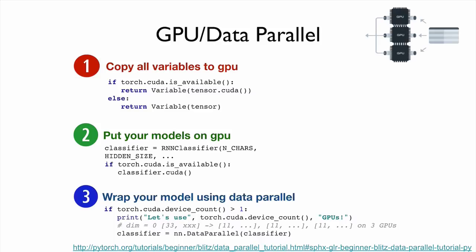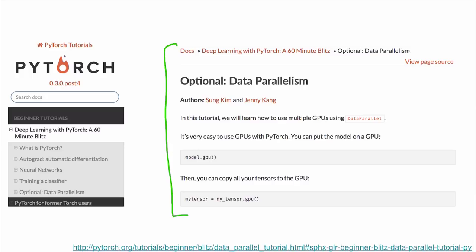If you have more than one GPU, you can use data parallelism, which is also extremely simple. Create your classifier, then wrap it using DataParallel, which returns another classifier. When you feed input data, PyTorch will automatically divide it across the number of GPUs and merge the outputs. If you want to know more, there is a tutorial on PyTorch.org.